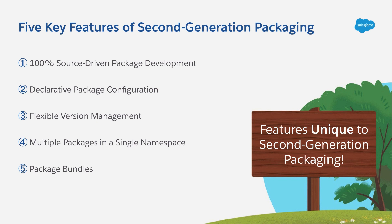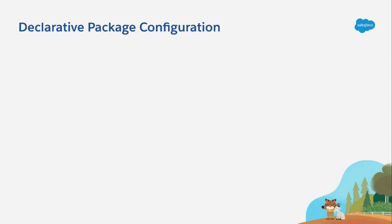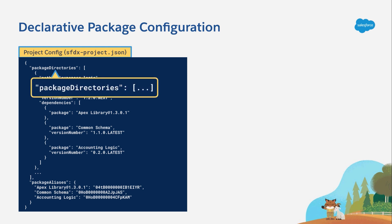These videos provide an in-depth look at the features and use cases for second-generation packaging. The second feature we'll be covering is a big part of 2GP's source-driven package development model, and that's declarative package configuration. Every Salesforce DX project starts with a project configuration file. This file is always named sfdx-project.json, and it always contains a key named Package Directories. This key holds an array of JSON objects that define each package within your project.